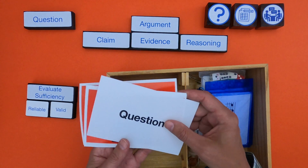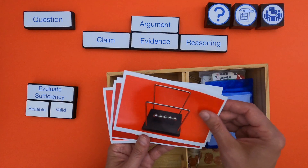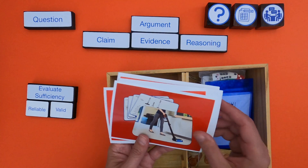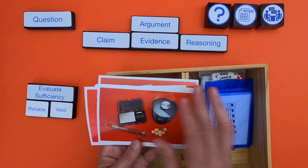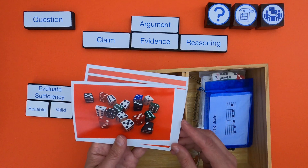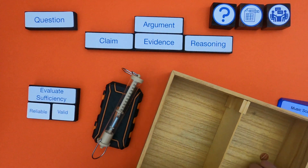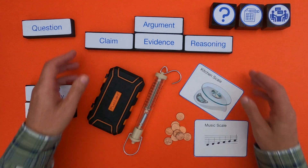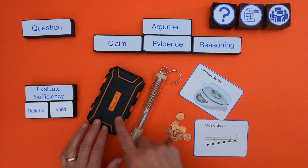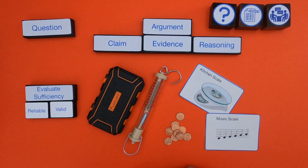After watching this video you should be able to present arguments around questions related to energy transfer in Newton's Cradle, or which is the best vacuum. But I'm going to start by showing you how to present an argument around different types of scales — a lab scale, spring scale, kitchen scale, and music scale — which we used to measure some pennies.